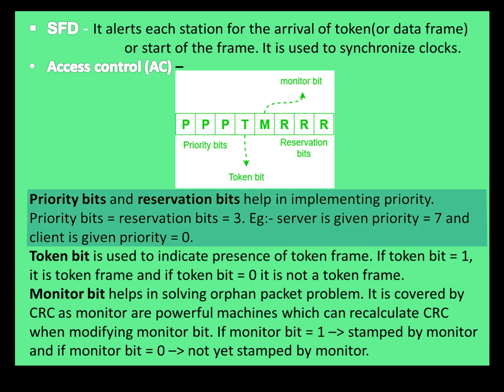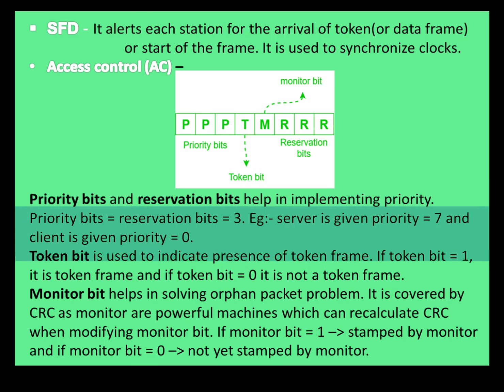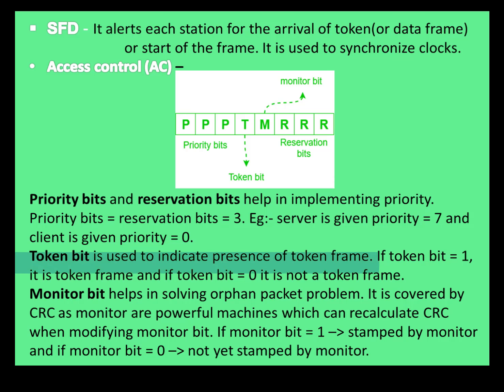Priority bits and reservation bits help in implementing priorities, so the frame with higher priority is selected and moved forward. The token bit is used to indicate the presence of a token frame. If the token bit is one, it contains the token; if not, it does not contain the token.